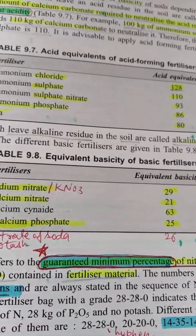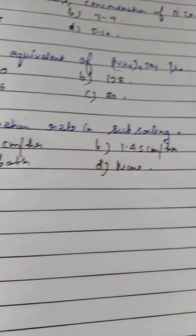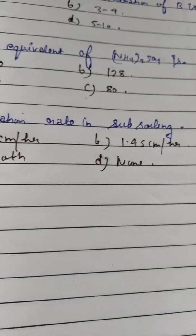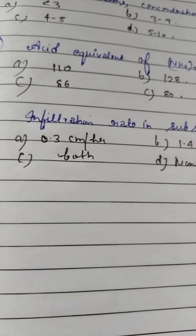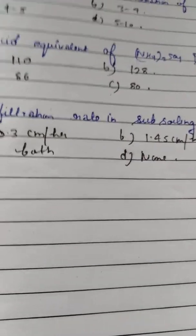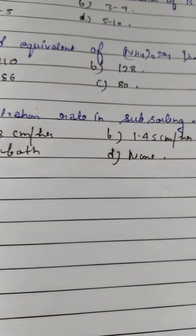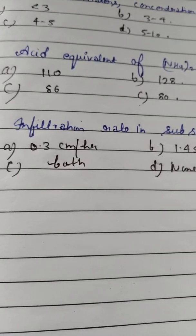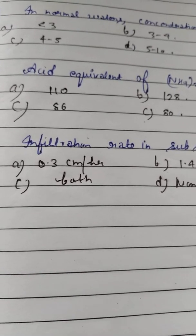Question number 10: Infiltration rate in subsoiling — Option A: 0.3 cm per hour. Option B: 1.45 cm per hour. Option C: Both. Option D: None. It cannot be both or none. The correct answer is 1.45 cm per hour for subsoiling. The 0.3 cm per hour is the infiltration rate in conventional tillage. Please remember it.